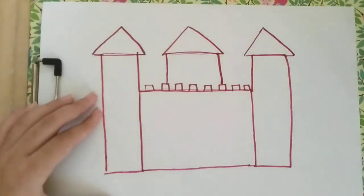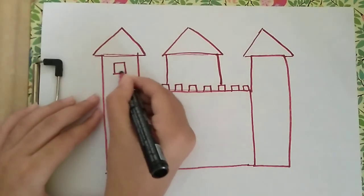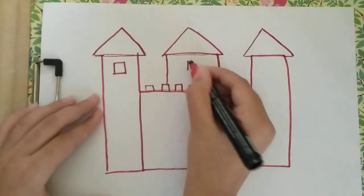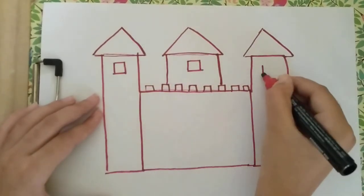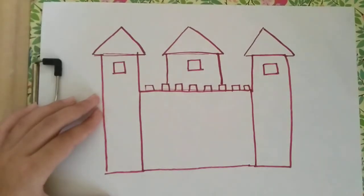Once you finish drawing a triangle, you're going to put small windows to the castle. You can use any shape: square, circle, or an arch, any kind that you like. Okay, after this, now what is missing? You're going to draw a door to the castle.